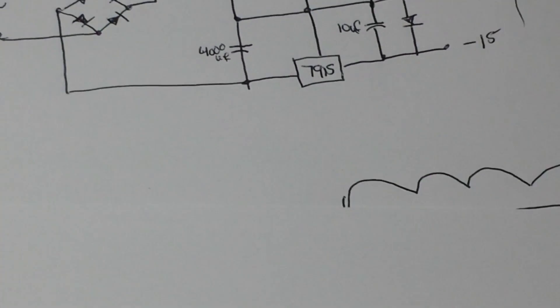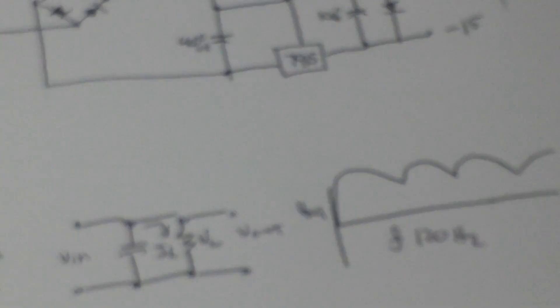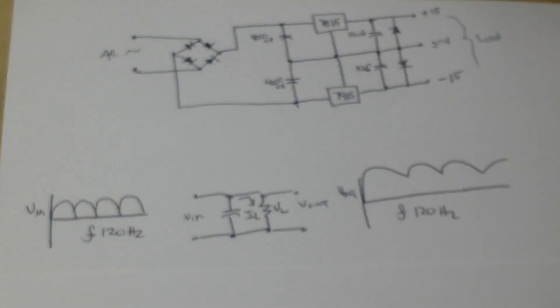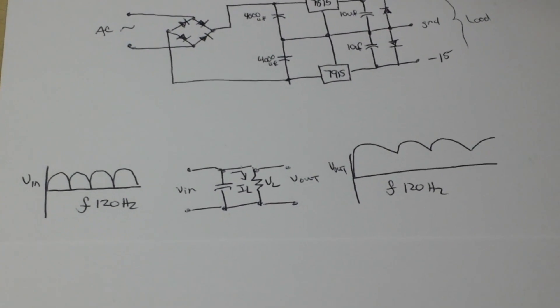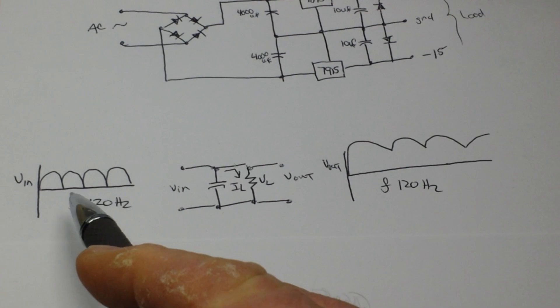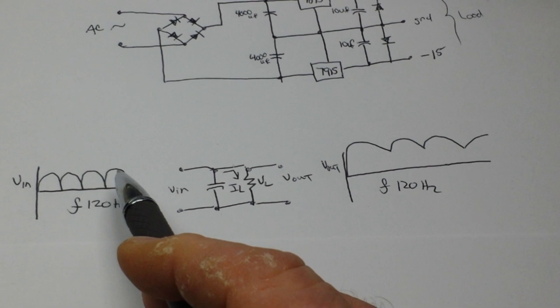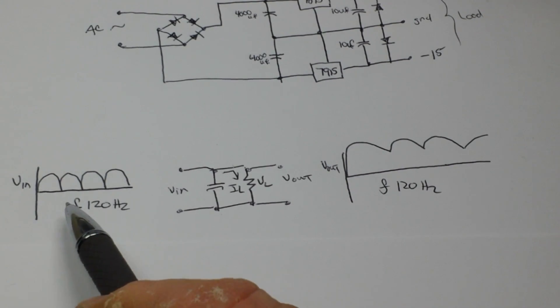When you rectify AC to DC, you're going to have some ripple. So let's roll down here a little bit. Let's say this is what our unfiltered DC looks like coming from the bridge rectifier.